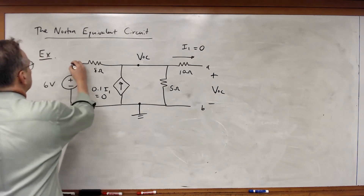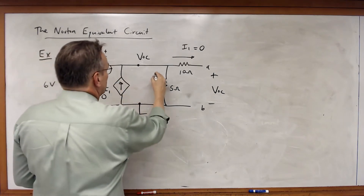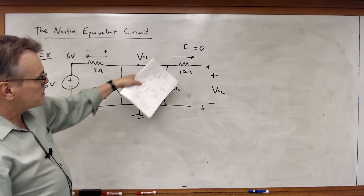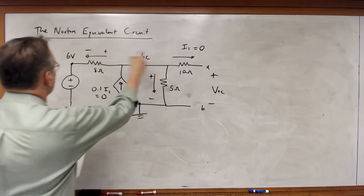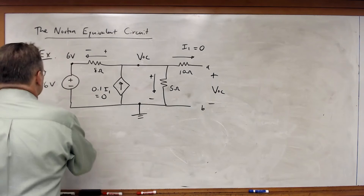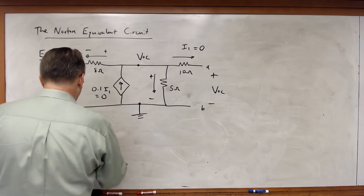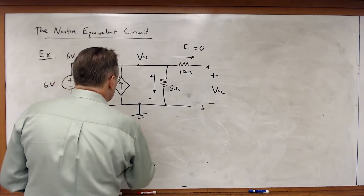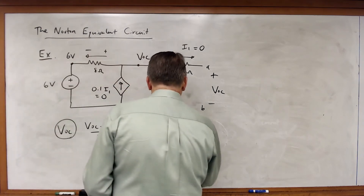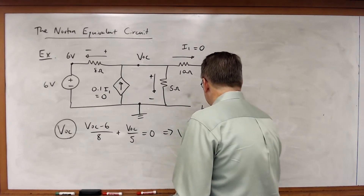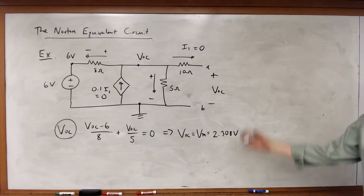This node becomes 6 volts. I'm going to pick a current flowing through this direction and write my KCL. For my V_OC node, I have that (V_OC minus 6) over 8 plus V_OC over 5 is equal to 0. Therefore V_OC, which is equal to V_TH, will just be equal to 2.308 volts. So that's pretty straightforward.